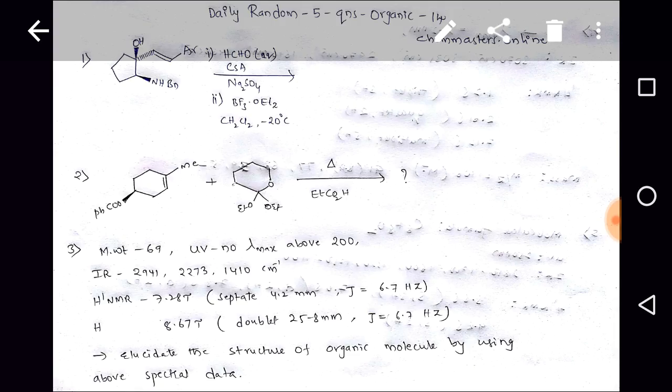All the best once again. Now look at the first question on stereochemical substrate — applying formaldehyde in aqueous conditions with camphorsulfonic acid and sodium sulfate. The second conditions are boron trifluoride with ether and dichloromethane at minus 20 degrees centigrade. What will be the product? Please try to solve it.